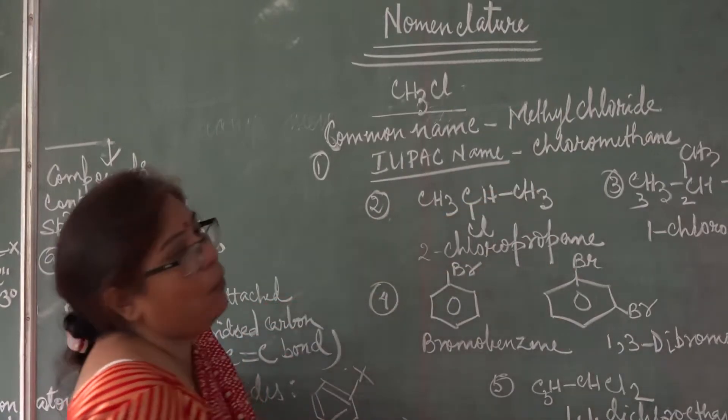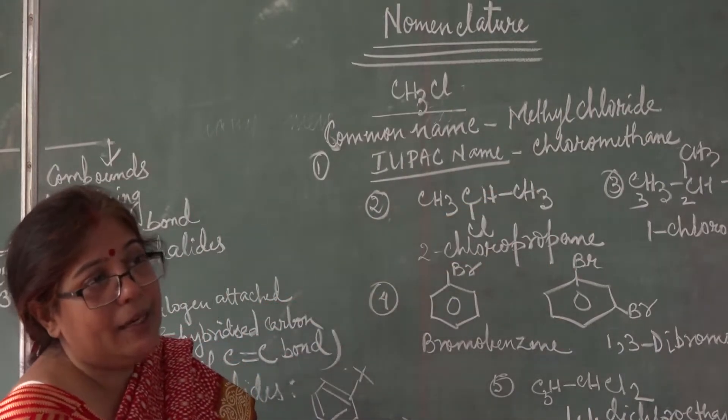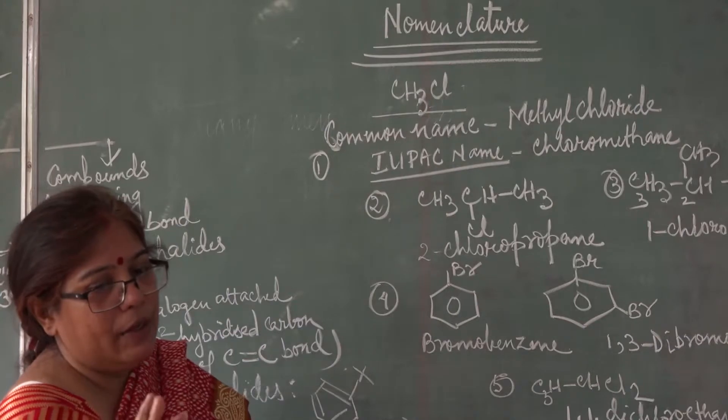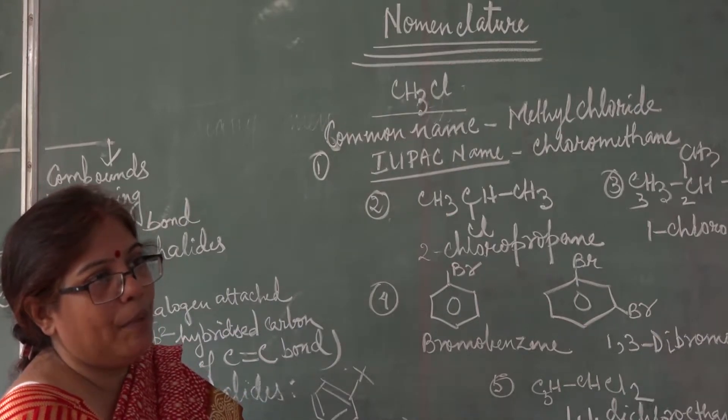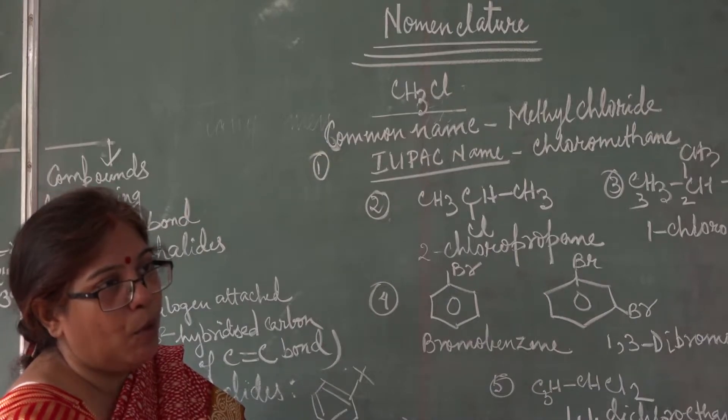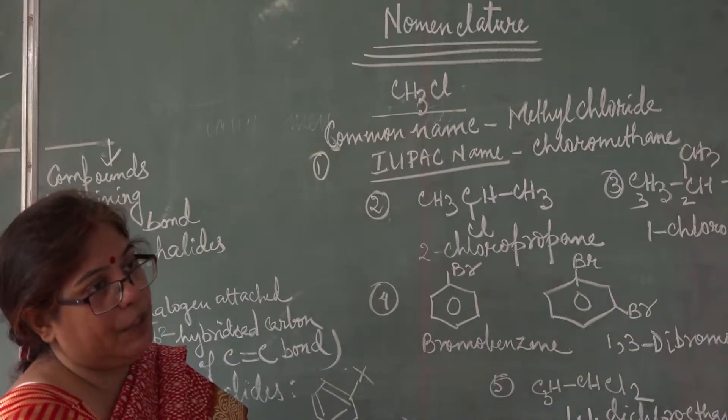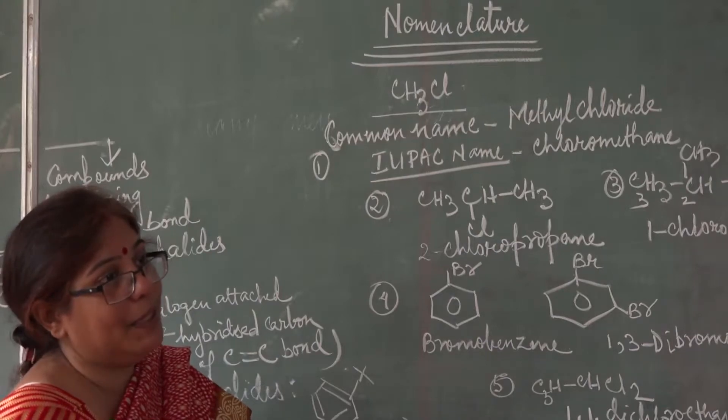What is its IUPAC name? Chloromethane. Similarly, you will write the structure of bromomethane, bromomethane, bromopropane. You just now, you write it by yourself.